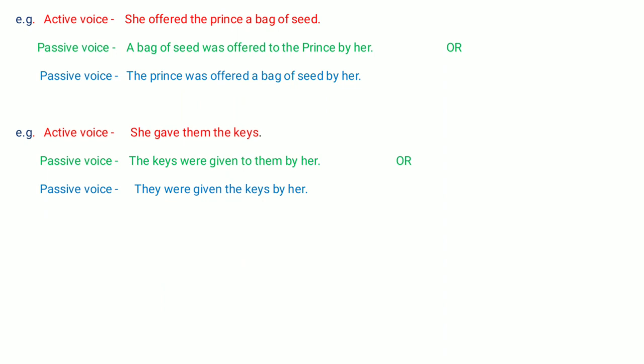Next example: 'She offered the prince a bag of seed.' What did she offer? 'A bag of seed' — direct object. To whom? 'To the prince' — indirect object. Taking direct object as subject: 'A bag of seed was offered to the prince by her.' Taking indirect object as subject: 'The prince was offered a bag of seed by her.'